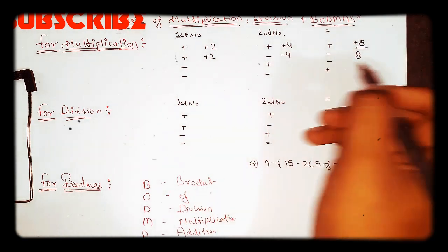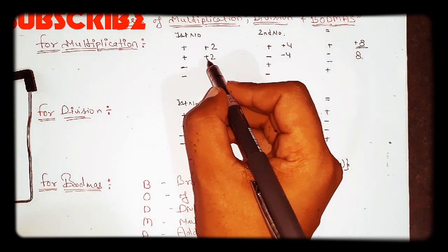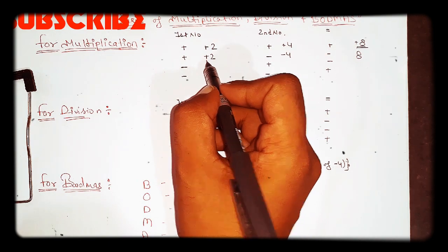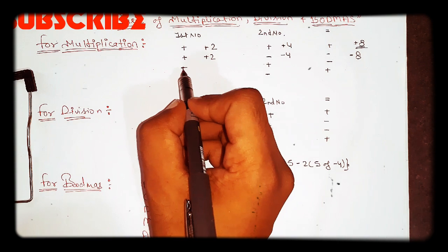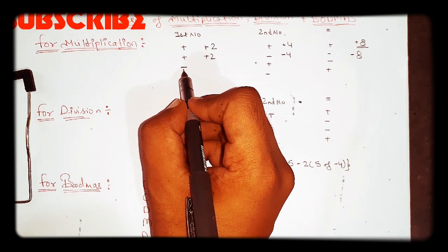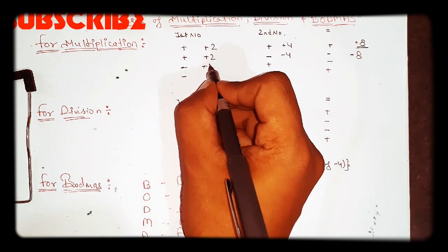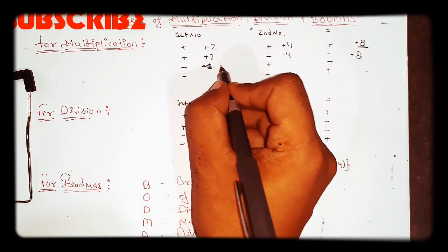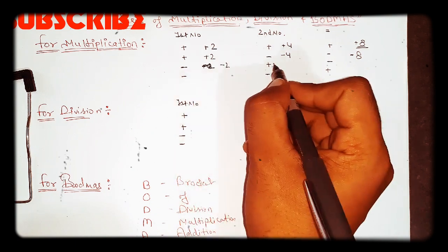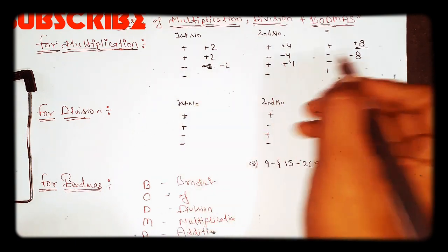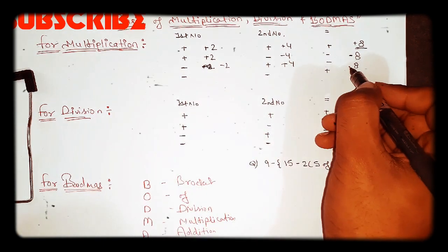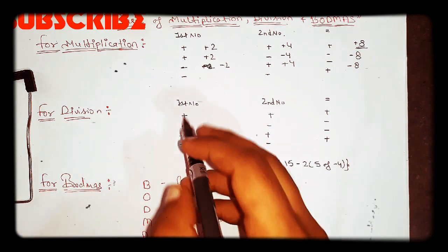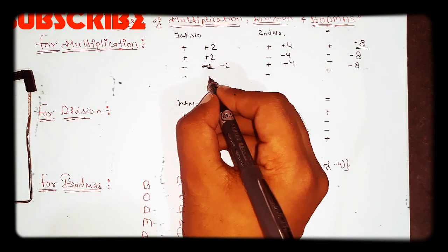If the first number is positive and the second is negative — for example, positive 2 and negative 4 — then 2 into 4 is 8, but the symbol will be negative. So the answer is negative 8.